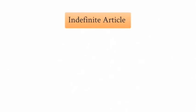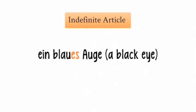Now let's continue with the indefinite article. Ein blaues Auge, which can be translated as 'a black eye.' Here the color adjective blau, which means blue, changes to blaues. Auge is neutral — Das Auge — so a black eye is Ein blaues Auge.